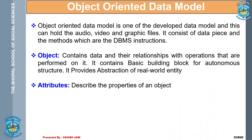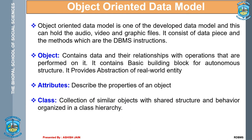Then we have attributes, which describe the properties of different objects. Then we have a class. A class is a group of similar objects — a collection of similar objects with shared structure and behavior organized in a class hierarchy.